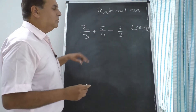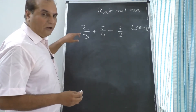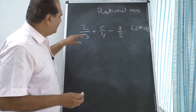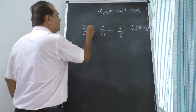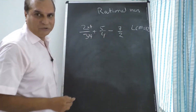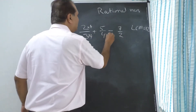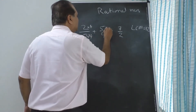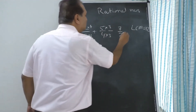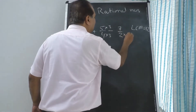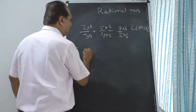3, 4, 2 — LCM is 12. So you have to change each denominator to 12. For 3, multiply by 4 — but not only the denominator; you have to multiply the numerator also by 4. For 4, multiply by 3, and multiply the numerator also by 3. For 2, multiply by 6, and multiply the numerator by 6 as well.